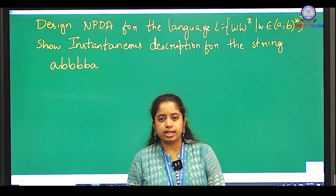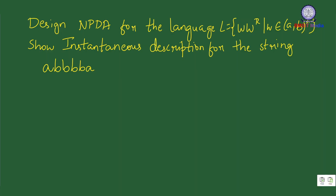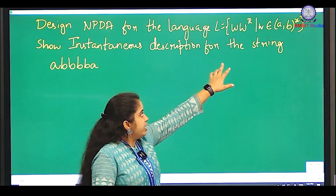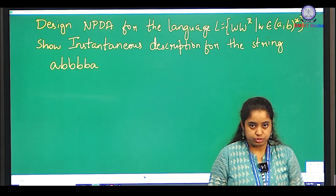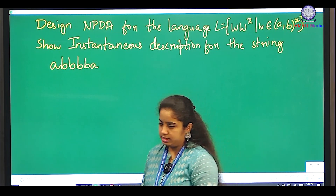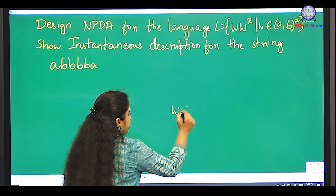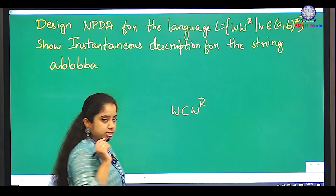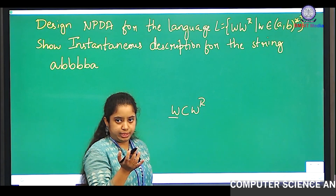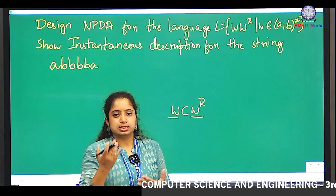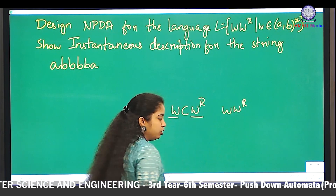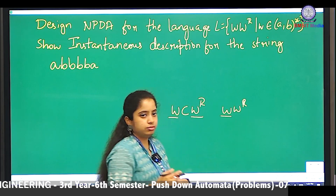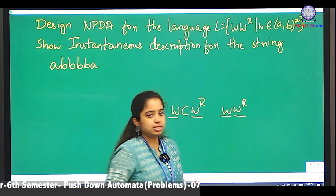The next question is: design an NPDA, that is non-deterministic PDA, for the language L = {ww^r}, where w belongs to {a, b}* and w^r is the reverse of the string. In the previous example we had wcw^r, so you could understand when the string ended and when the reverse started. But in ww^r, you do not know when the string w stops and when the reverse w^r starts.